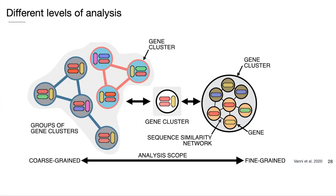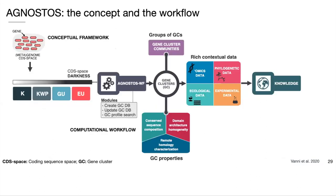This hierarchical structure allows us to perform analysis at different levels. For fine-grained analysis, we can exploit gene associations inside the gene clusters. For more coarse-grained analysis, we can use groups of gene clusters based on their remote homologies. All these steps contribute to building Agnostos, our computational workflow, together with a rich contextualization of the gene clusters, gathering phylogenetic and ecological data retrievable from genomic and metagenomic datasets.